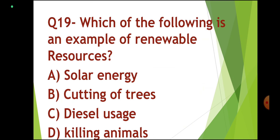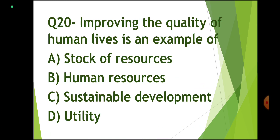Question number 19: Which of the following is an example of renewable resources? Options: Solar energy; Cutting of trees; Diesel usage; Killing animals. Correct answer: Solar energy. Question number 20: Improving the quality of human lives is an example of — Stock of resources; Human resources; Sustainable development; or Utility. Correct answer: Sustainable development.